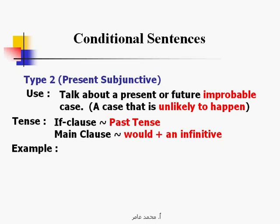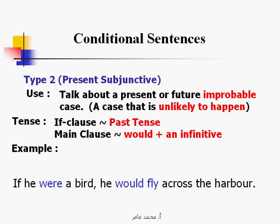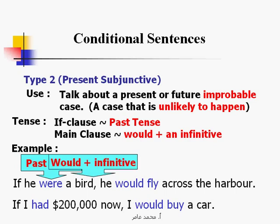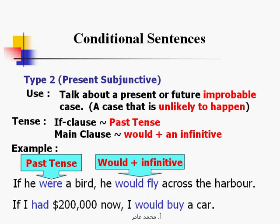For example: if he were a bird, he would fly across the harbor. If he had $200,000, he would buy a car. Here, the if clause is in the past simple tense, and the main clause uses would plus infinitive.